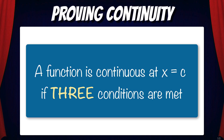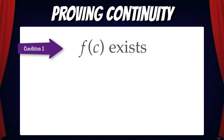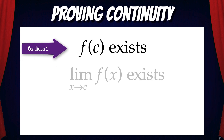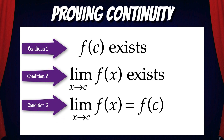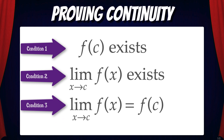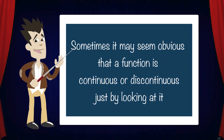And this involves three conditions. Condition 1: f(c) must exist. Condition 2: the limit as x goes to c of f(x) also must exist. Condition 3: the limit of f(x) as x goes to c must equal f(c).